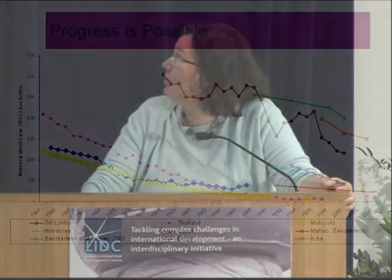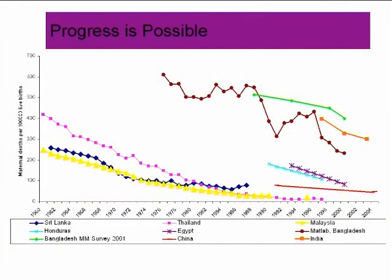On a more optimistic note, progress is possible. Countries with long time series — Sri Lanka, Thailand, and Malaysia — show good routine data with sustained declines. There are also quite good data from India, Bangladesh, and Egypt showing that in the period we've been discussing, there have been sustained declines in mortality.